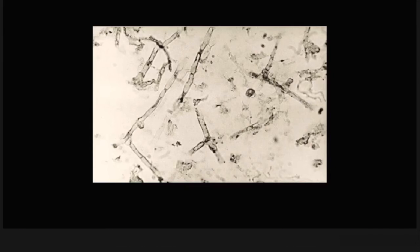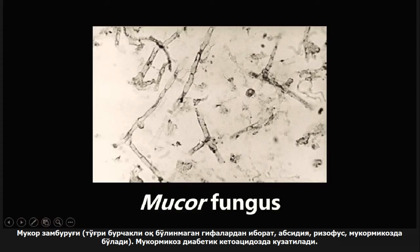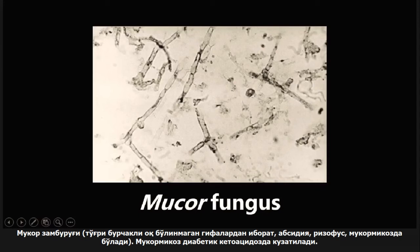This next one is where the USMLE and COMLEX want you to use a little geometry. This is the mucor fungus, and the main thing to look at is the right-angle branching non-septate hyphae — these 90-degree branchings. If you see that, there are three fungi to think about: absidia, rhizopus, and mucor. I remember that because they spell ARM or RAM, whichever you prefer.